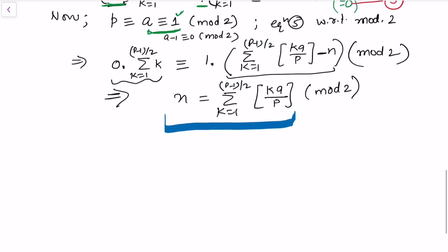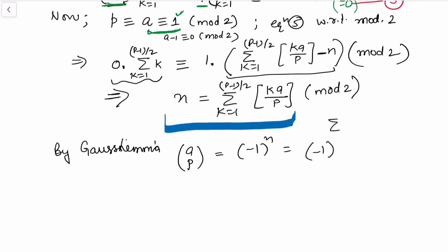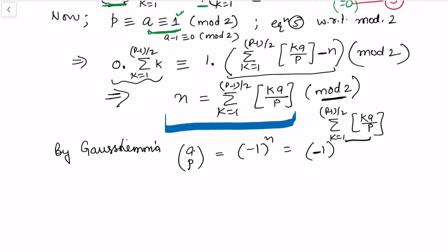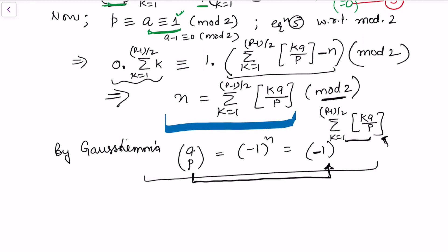This is exactly what we wanted to prove. By Gauss's lemma, (a/p) = (−1)^n, and we have just shown that n ≡ summation of floor(ka/p) for k from 1 to (p-1)/2 (mod 2). It makes sense modulo 2 because the Legendre symbol takes only two values: +1 if the sum is even, −1 if odd. This lemma converts the Legendre symbol into a power of −1 involving the greatest integer function.